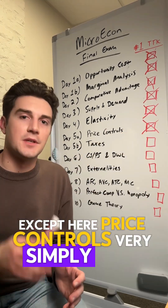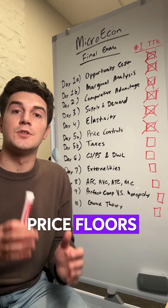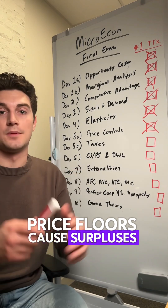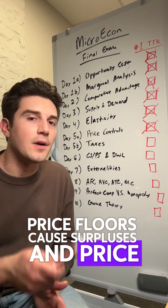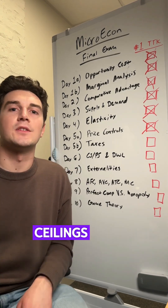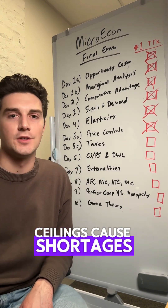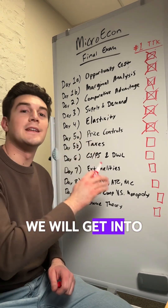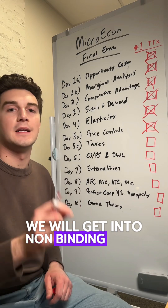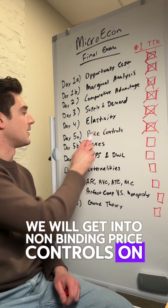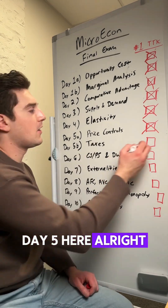Price controls. Very simply: price floors cause surpluses and price ceilings cause shortages. We will get into non-binding price controls on day five.